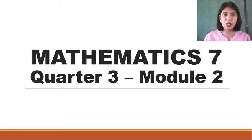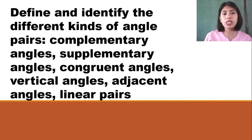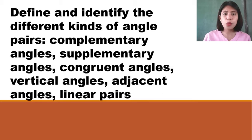Good day, Math Gagaling students! I am here, teacher Jop, and I will be going to discuss a lesson from Mathematics Grade 7, 4-3-3 Module 2, which is Kinds of Angle Pairs. In this video, I will identify and define the different kinds of angle pairs, such as Complementary Angles, Supplementary Angles, Congruent Angles, Vertical Angles, Adjacent Angles, and lastly, the Linear Pairs.